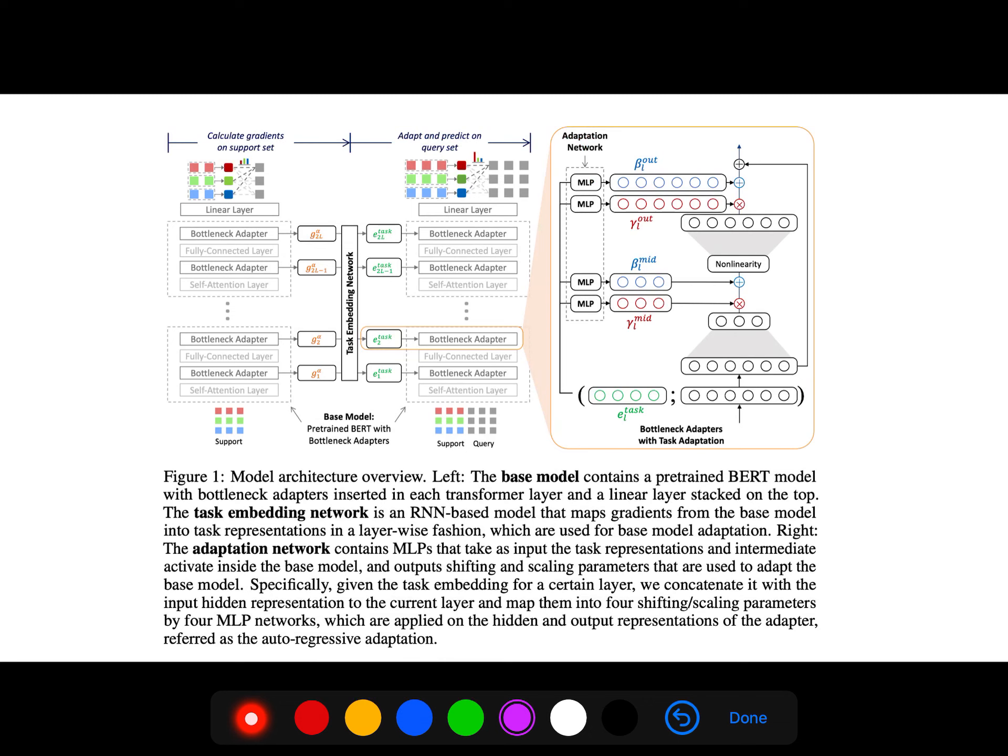This is the model architecture. The base model contains a pre-trained language model with bottleneck adapters inserted in each transformer layer and a linear layer stacked on the top. The task embedding network is an RNN-based model that maps gradients from the base model into task representations in a layer-wise fashion which are used for base model adaptation.